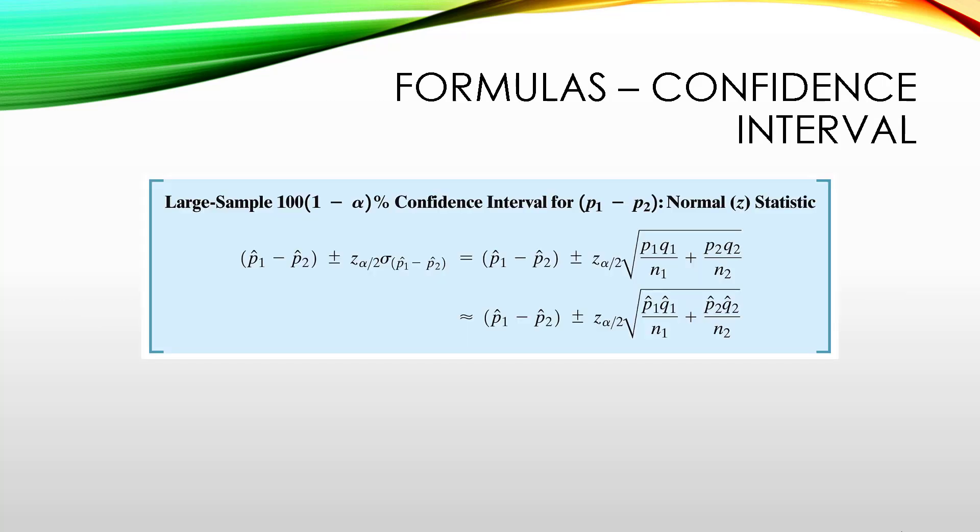To create a large sample confidence interval for proportions you would use these formulas where your point estimate is just the difference in proportions and you add and subtract the margin of error just like before.